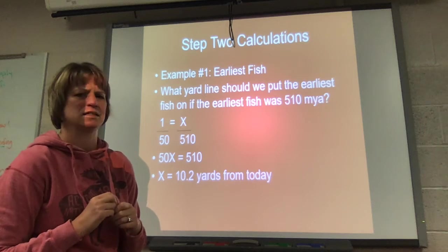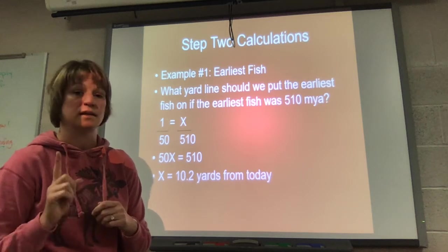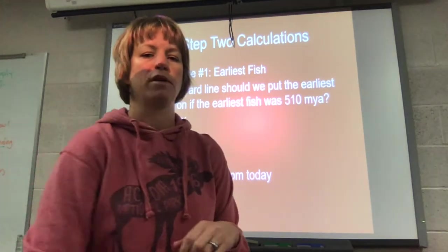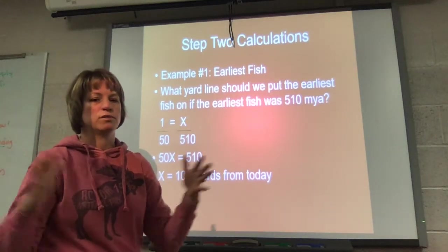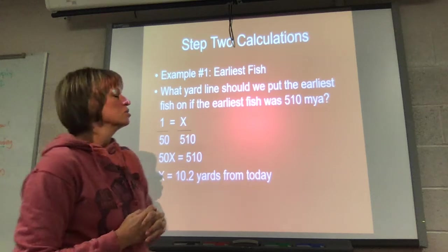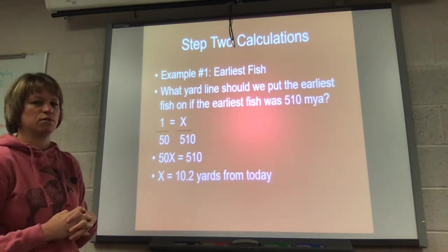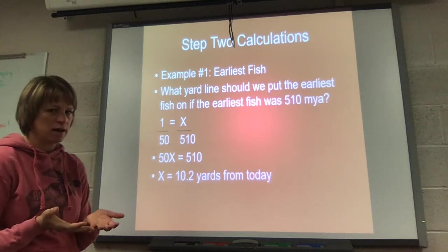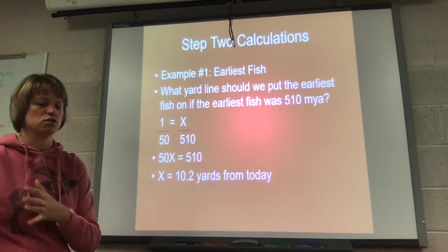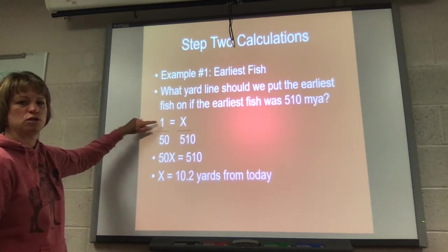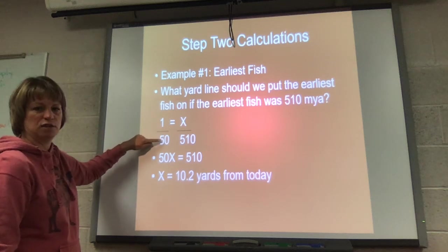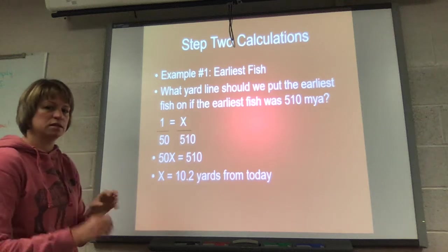And you might be like Mrs. Ficus, no! One yard, 50 million? Yes, because this is an earth that scientists agree is 4.5 to 4.6 billion with a B. So in order to get a large enough timeline, 50 million years is one yard. So here's how we set up our proportion, and I honestly want you to understand why we do it this way. So remember when you do a proportion, you set it up like this: we have one yard is 50 million years.